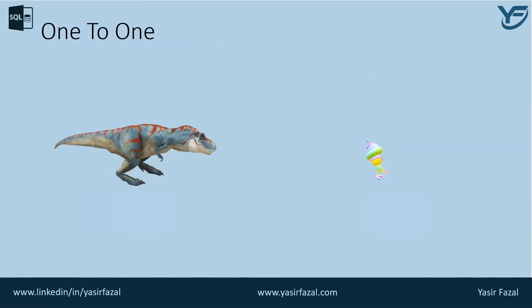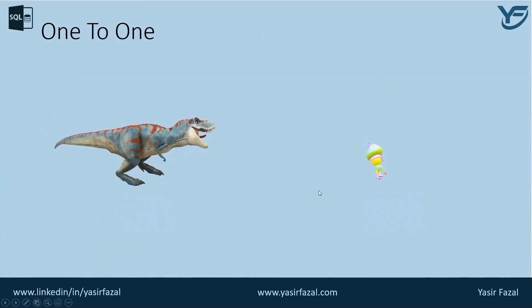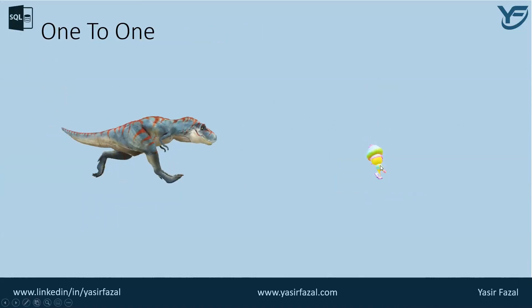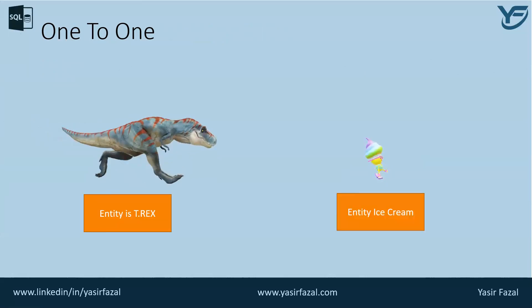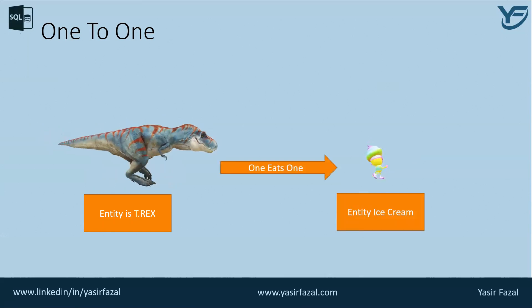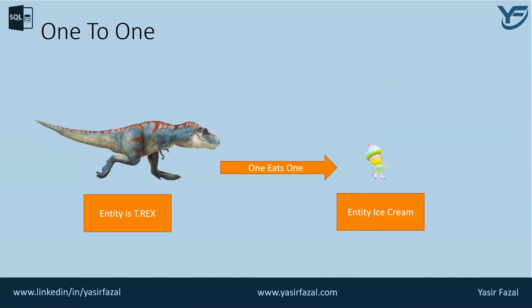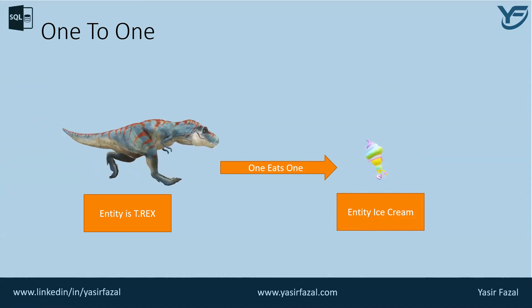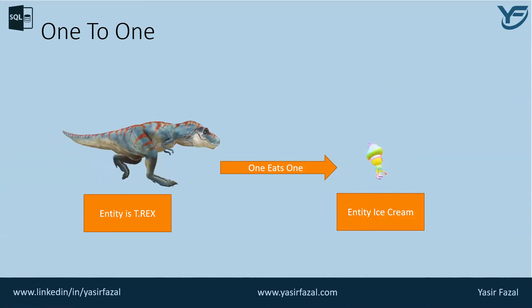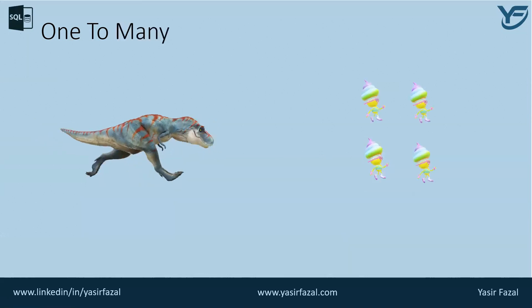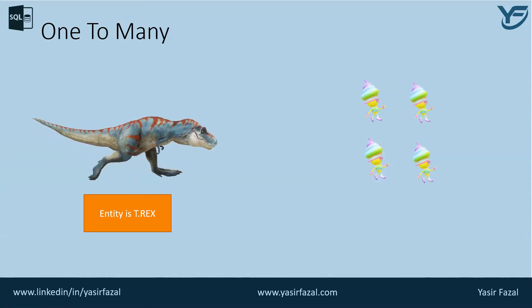The first cardinality is one-to-one. There is one entity — T-Rex — and a second entity — Ice Cream — and one T-Rex would like to eat only one Ice Cream. So this is a one-to-one relationship between two entities.